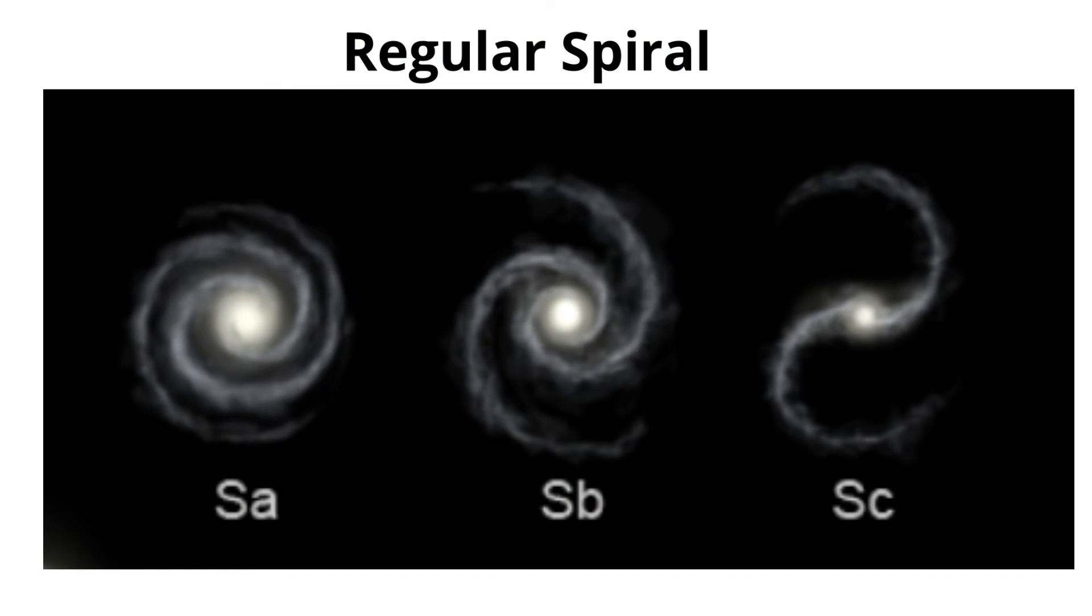The regular spiral galaxies are also subdivided according to how tight the arms are. S-A arms are tightly wrapped. S-C are loosely wrapped.